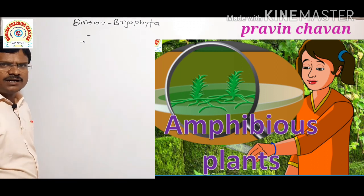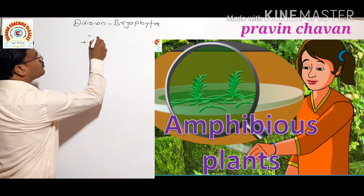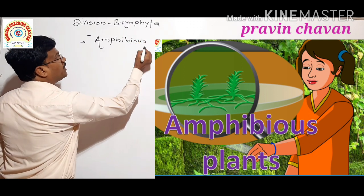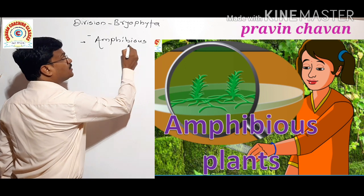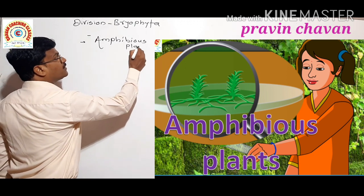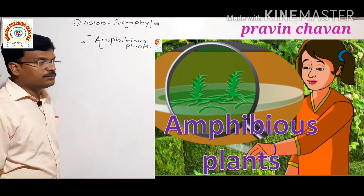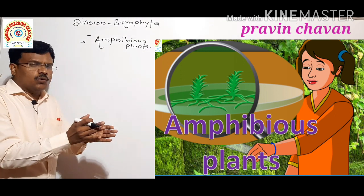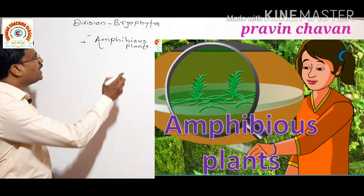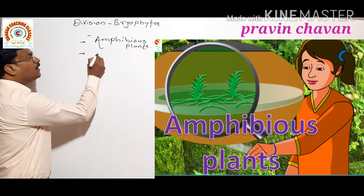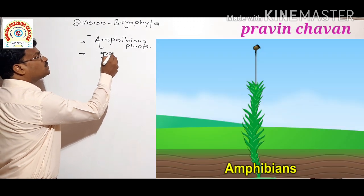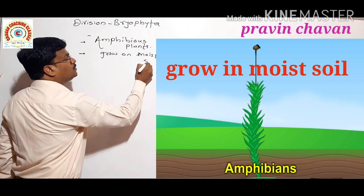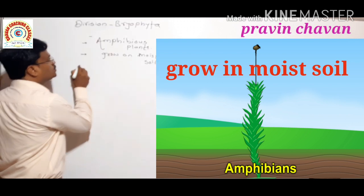Plants belonging to Bryophyta are called amphibious plants. Why amphibious? Because, as you know, amphibious means they grow on the moist soil. Plants belonging to Bryophyta grow on moist soil.